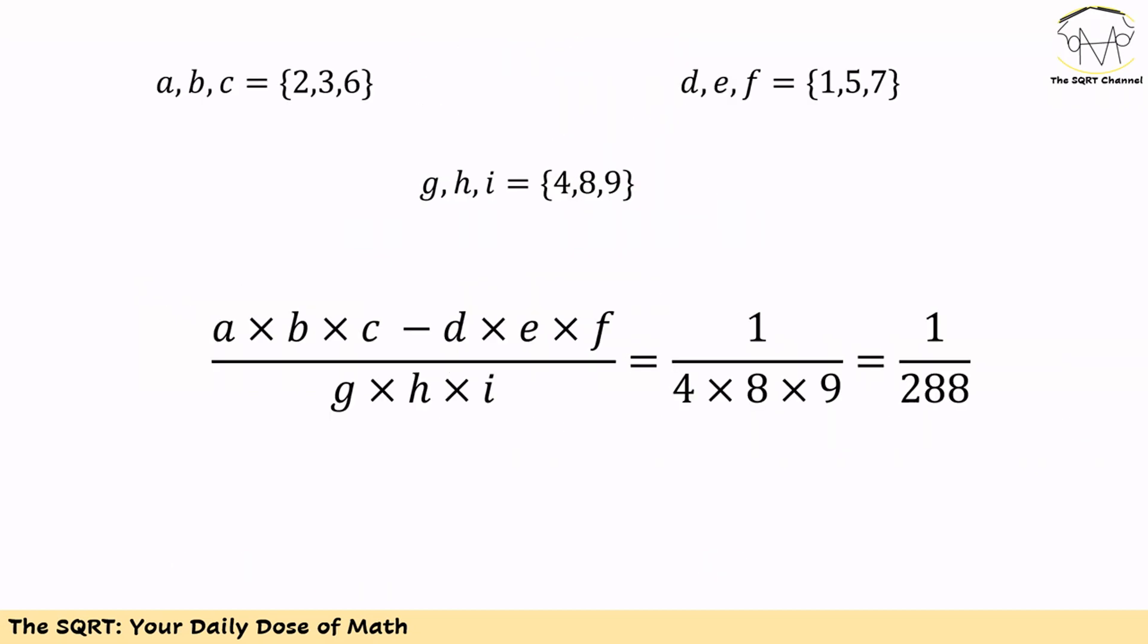Next step would be understanding the values that we can have for G, H, and I. Remember between A to I we have 9 numbers, and we know A to I are going to be between 1 and 9. So we have just one choice for G, H, and I, and they can be 4, 8, and 9.